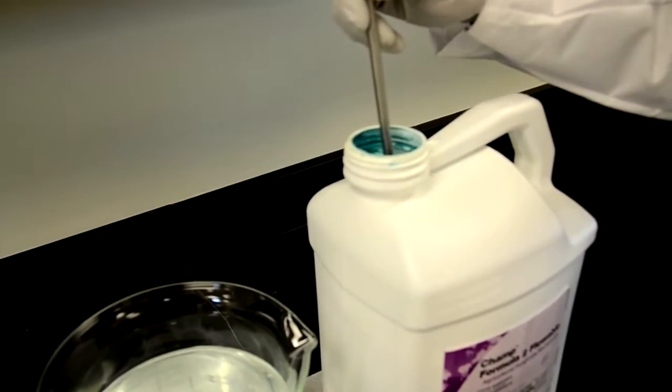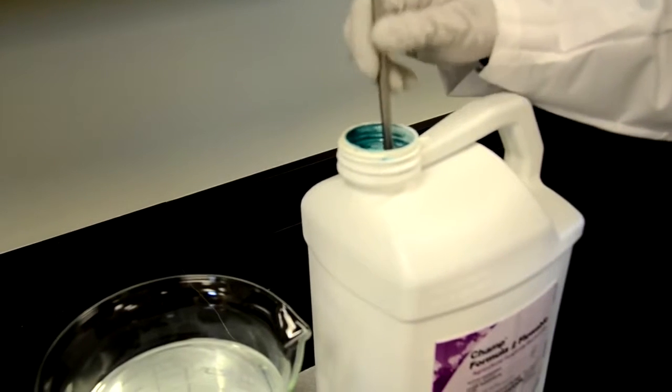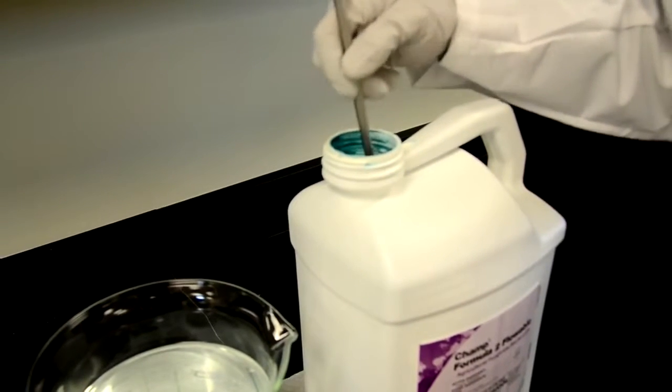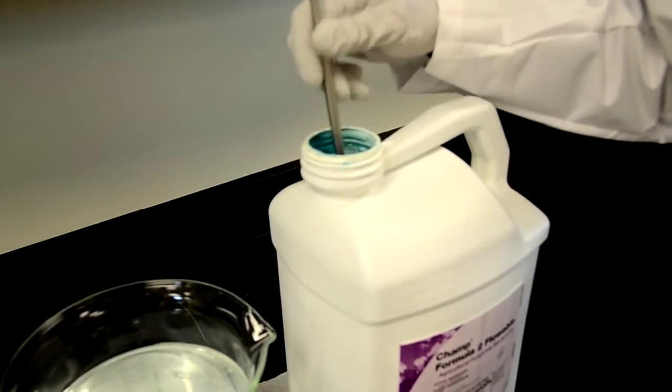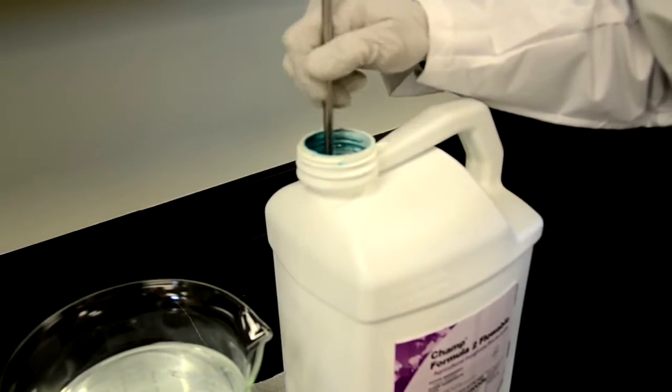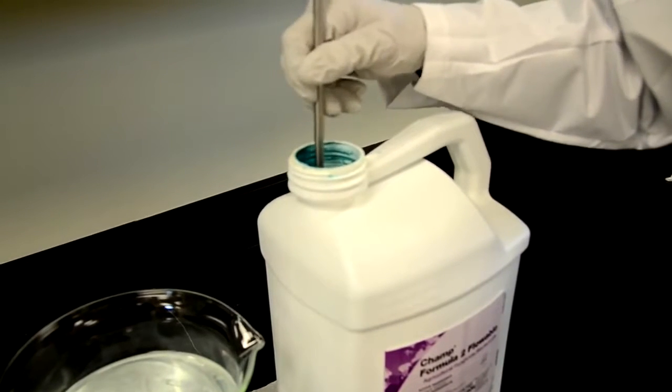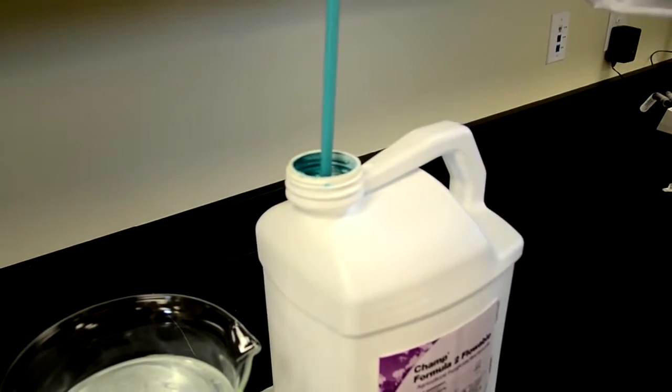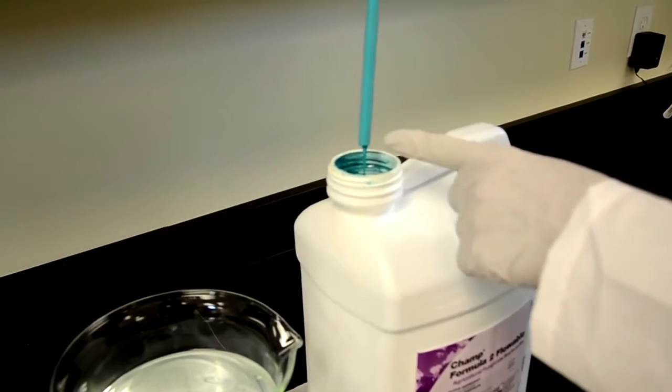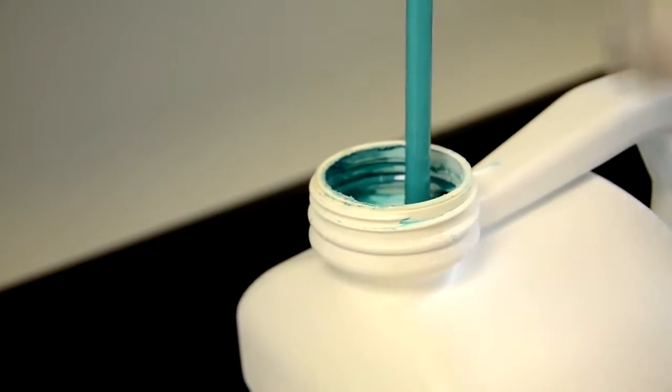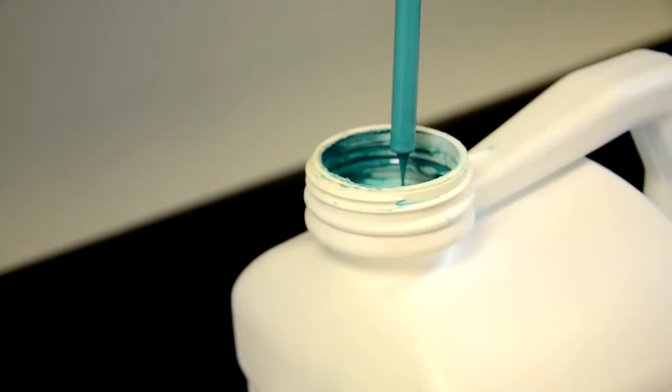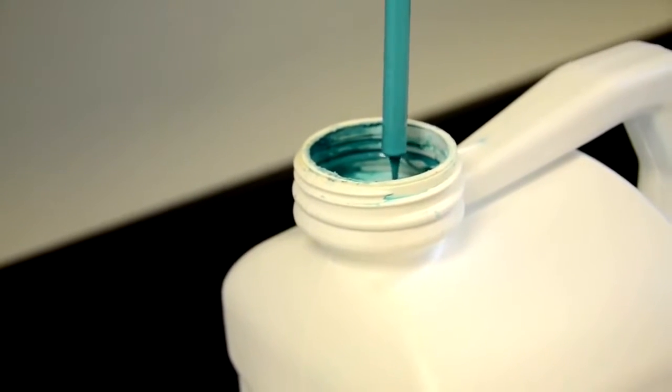When we do this test we put the probe in and we tap on the bottom. If you hear a clear tapping sound that means there's no sediment. Then we move the probe around and pull the probe out. If there's nothing on the base of it we know that there's no sediment. Notice how the rod is perfectly clean or uniform down through the bottom.